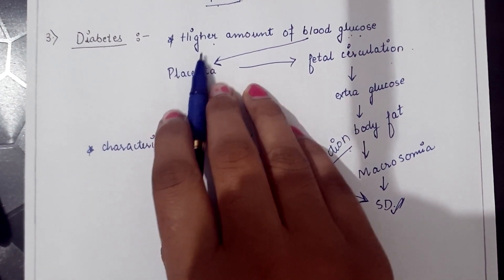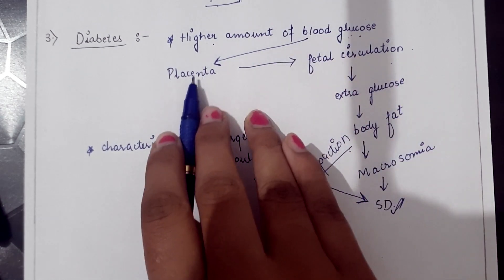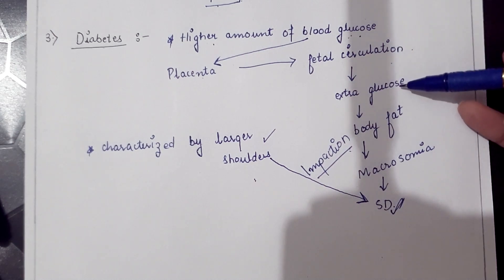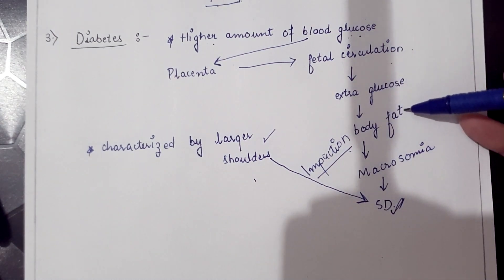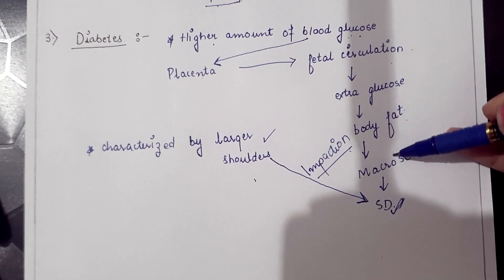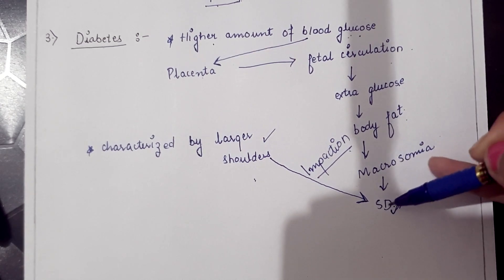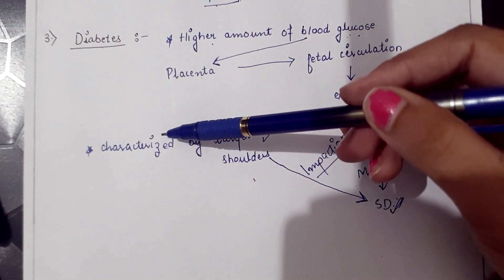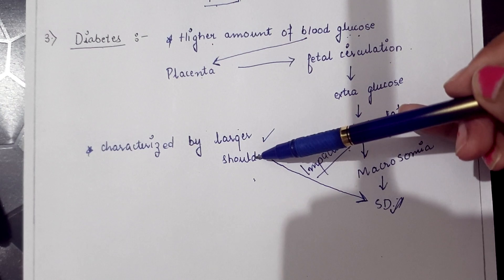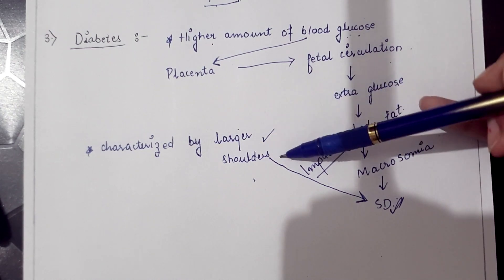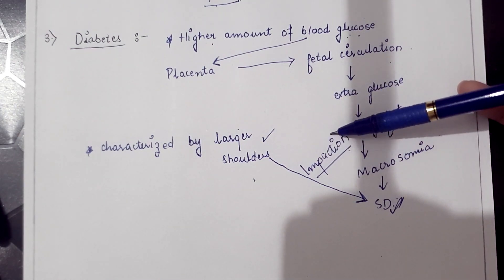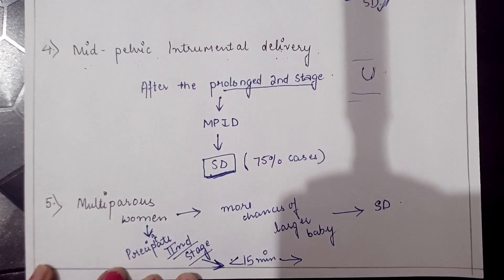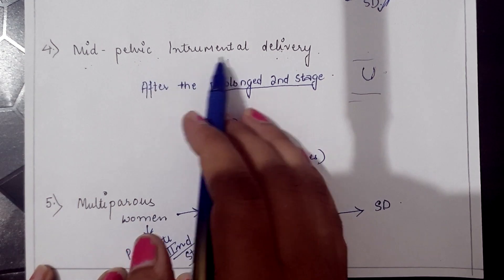In gestational diabetes, a higher amount of blood glucose passes from the placenta to the fetal circulation. That extra glucose is stored in the fetus as body fat, resulting in fetal macrosomia, which causes shoulder dystocia. Gestational diabetes is also characterized by larger shoulders, increasing the chances of shoulder impaction.